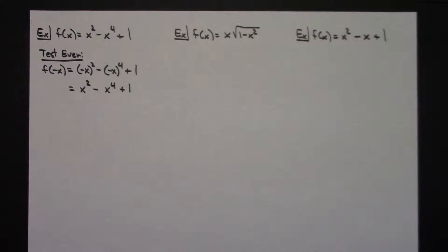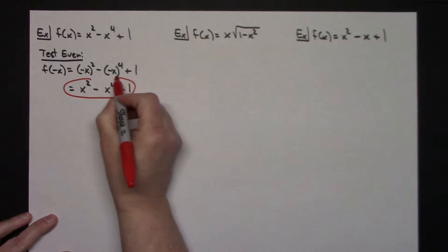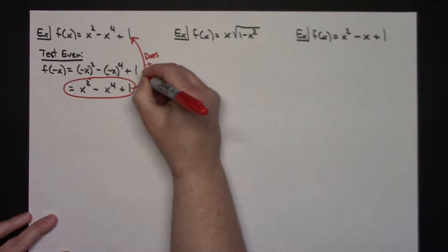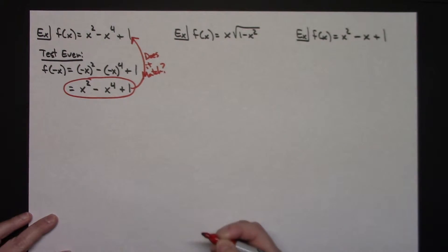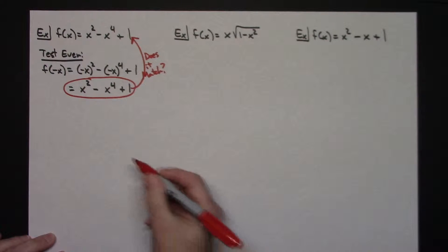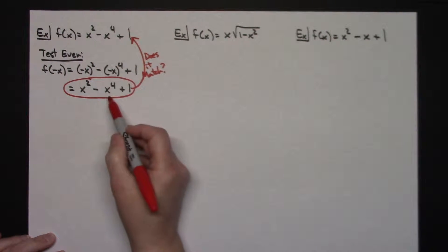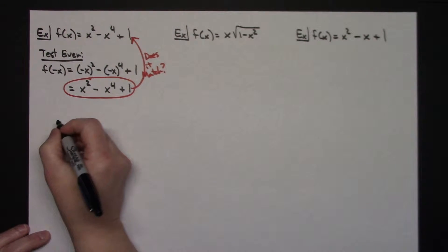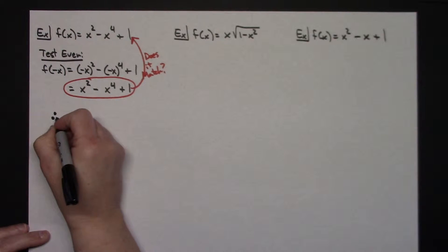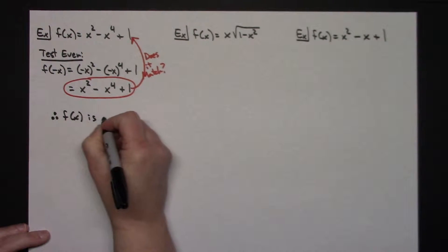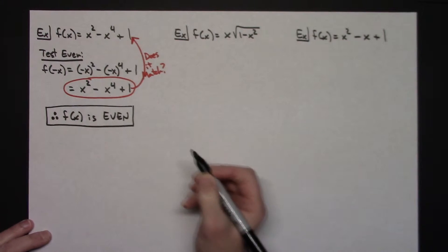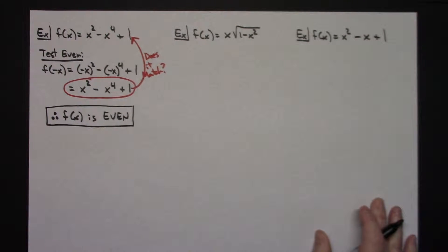Once I've simplified algebraically, I ask myself: does it match the original function? Looking at the result — x squared minus x to the fourth plus one — yes, it does match. So this function is even. I can say therefore f of x is even, and I don't need to go any further. If a function is even it's even, if it's odd it's odd, or neither — you don't have to test beyond that.